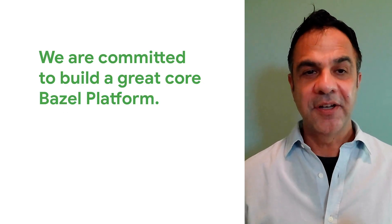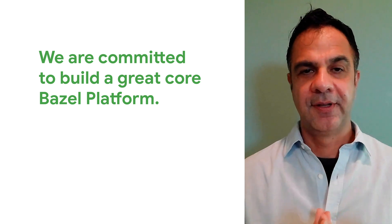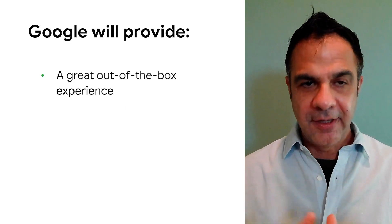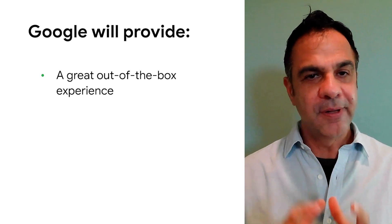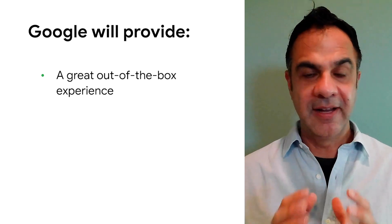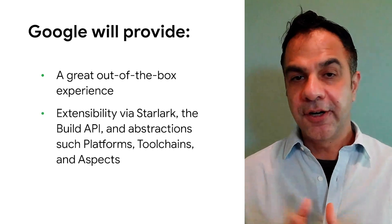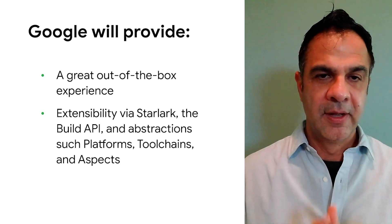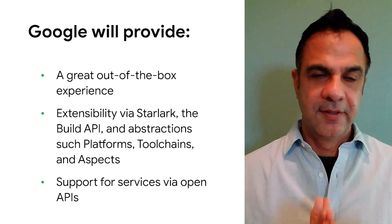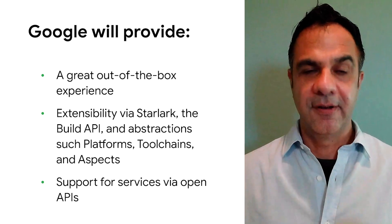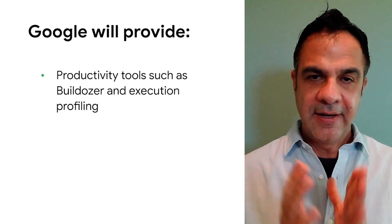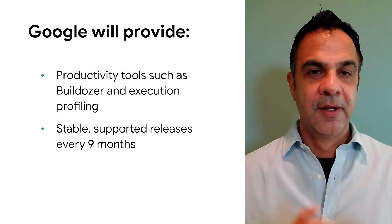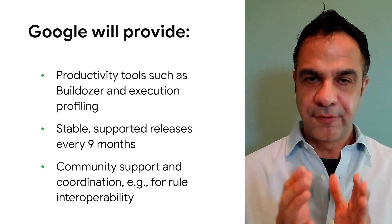We are focused on making Bazel a great platform and a great experience for rules owners and developers. This means being very clear about what Google will provide and where we need your help. What Google will provide: a great out-of-box experience for the core build systems and selected programming models and execution platforms; extensibility via Starlark, the build API, and abstractions such as platforms, toolchains, and aspects; support for services via open APIs such as remote execution and the build event protocol; productivity tools such as builddozer and execution profiling; stable supported releases every nine months; and community support and coordination, for example for rule interoperability.